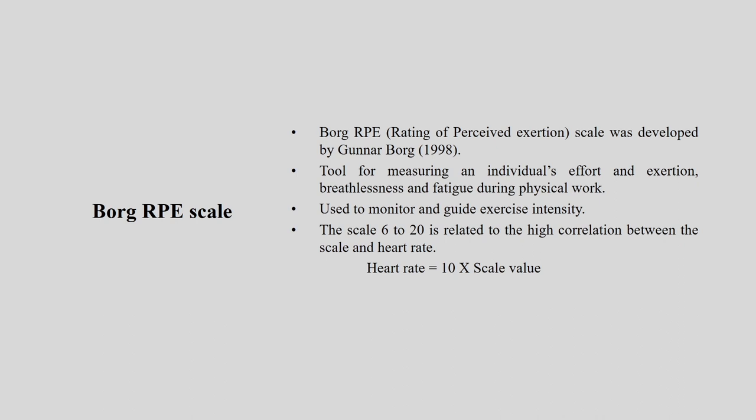The RPE scale is used to monitor and guide exercise intensity. Initially it was used when somebody is exercising to understand the kind of intensity level so that we can control the exercise module. This particular scale starts at 6 and ends at 20, and it has a direct connection with heart rate. Heart rate equals 10 times the scale value. So if you are at level 6, your heart rate is approximately 60.